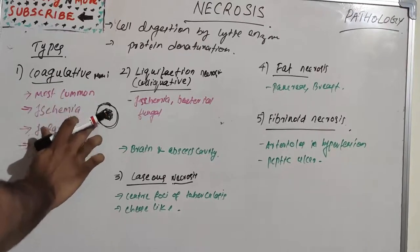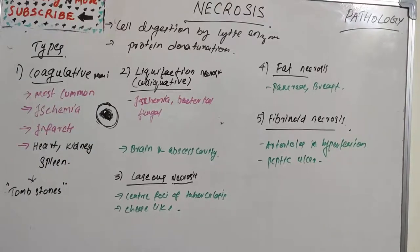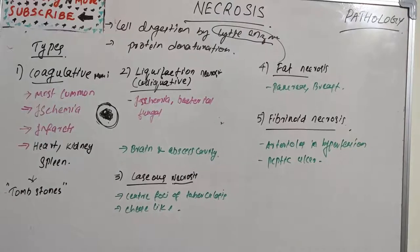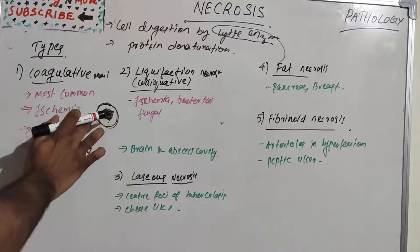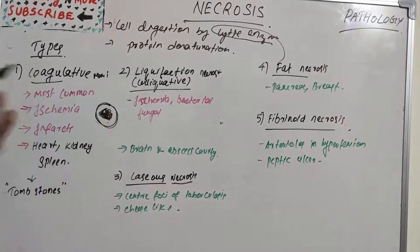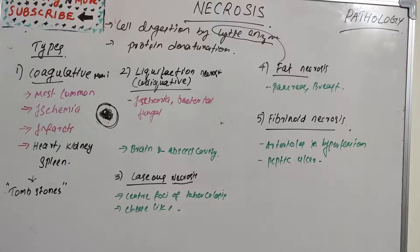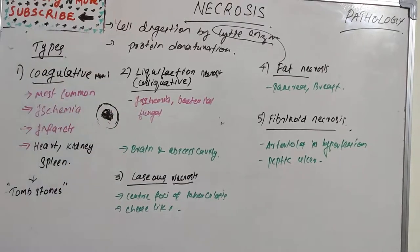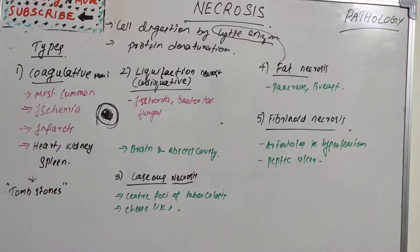The injury denatures not only the structural proteins but also the enzymes, so the proteolytic enzymes are not working — it blocks the proteolysis of dead cells and maintains the structural shape. As a result, eosinophilic anucleate cells may persist for days to weeks, but ultimately the necrotic cells are removed by phagocytosis. Initially the organ maintains its structural integrity — that is the feature of coagulative necrosis.